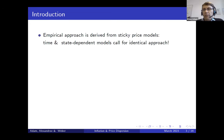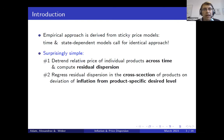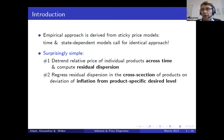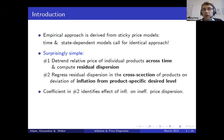Our empirical approach is derived from sticky price models. We show that two popular variants — time and state-dependent pricing models — call for an identical empirical approach, which turns out to be surprisingly simple. It involves two steps. First, you detrent the relative price of an individual product across time and compute the residual dispersion from this detrending regression. Second, you compute a regression in which the residual dispersion in the cross-section of products is related to a measure of deviation of inflation from its product-specific optimal level. The regression coefficient in this second regression identifies the effect of inflation on inefficient price dispersion.